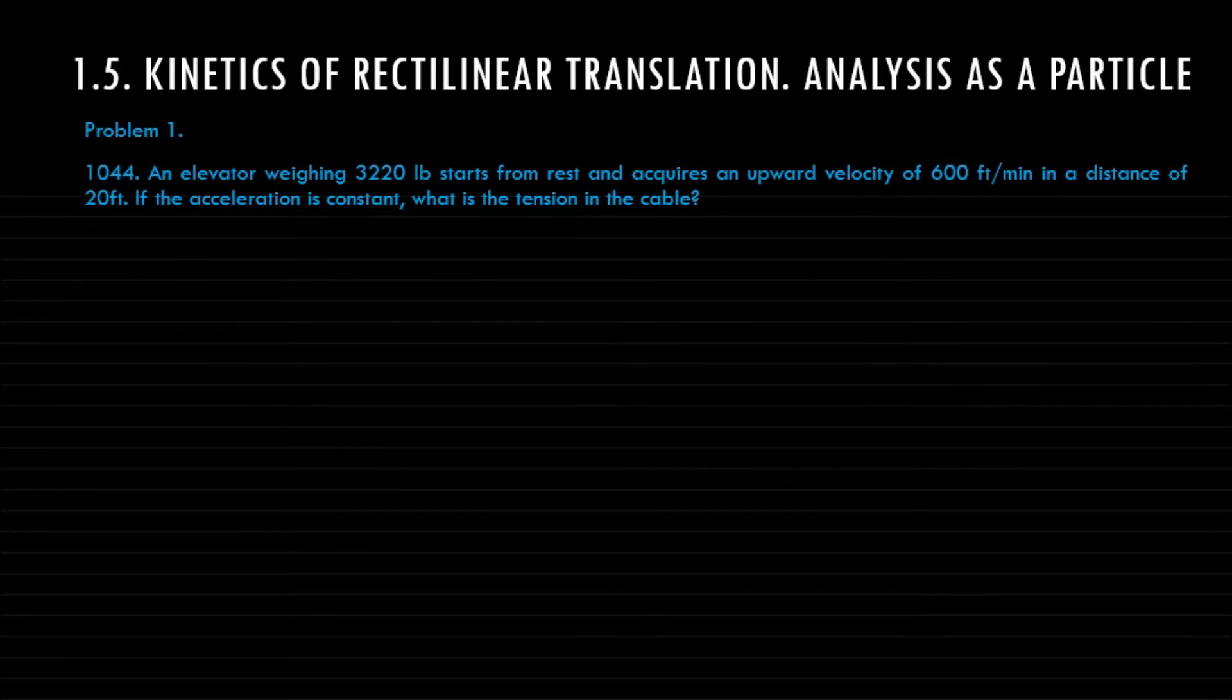For our problem number one from the book of Ferdinand Singer, chapter 10, problem number 44, we have an elevator weighing 3220 pounds. The weight of the elevator starts from rest, so meaning its initial velocity v₀ equals zero.